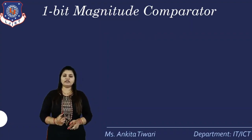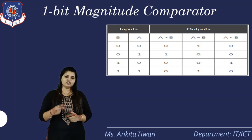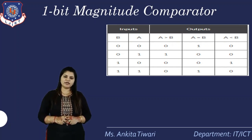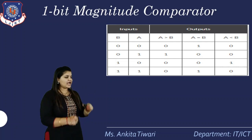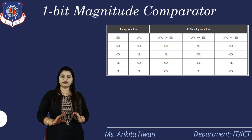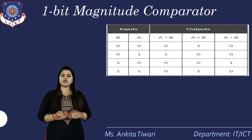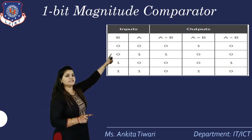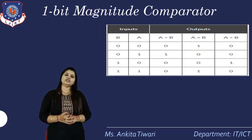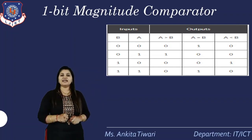We need to understand its working with the help of a truth table. Inputs a and b, each one bit, give four possible combinations: 00, 01, 10, and 11. The outputs are three fixed comparisons in any comparator: a greater than b, a less than b, and equal to. For 00, both values are equal, so the a equal to b output is 1. For 01, b is greater, so a less than b is active. For 10, a is greater, so a greater than b is 1.